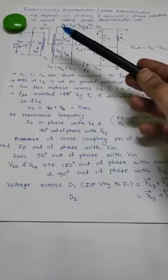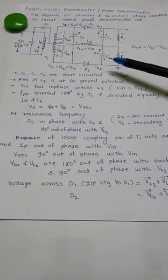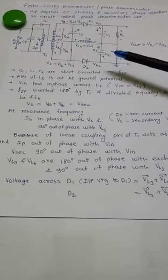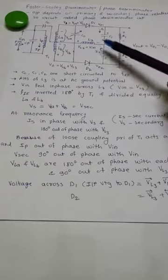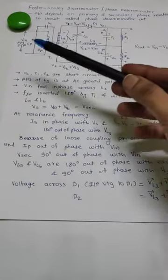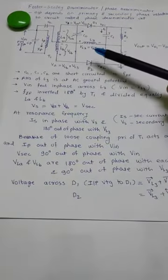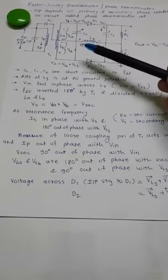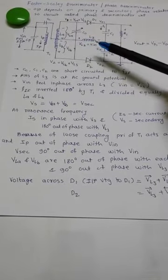Here coupling capacitor C1, C2 short circuited to the intermediate frequency. That is nothing but the input frequency. L3 is AC grounded and input is paired in phase with the voltage across L3. So, VL3 is equal to VIN.